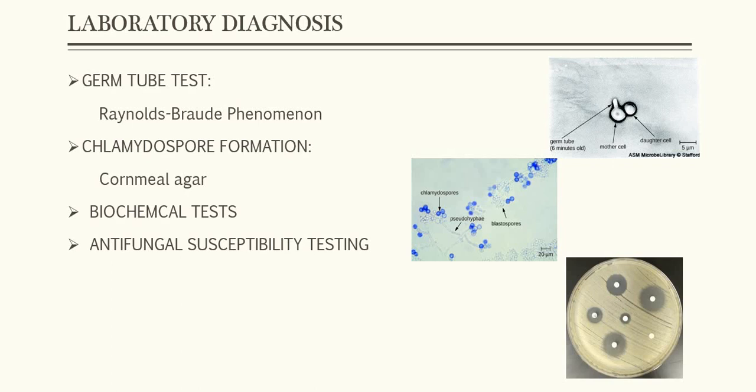Chlamydospore formation test is done on cornmeal agar. You can see chlamydospores, pseudohyphae, and blastospores. There are several biochemical tests also done, and antifungal susceptibility testing is done using Kirby-Bauer disc diffusion test.